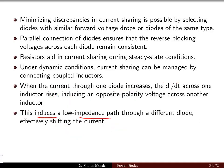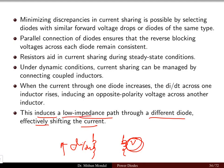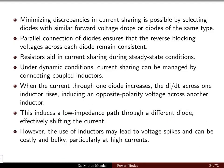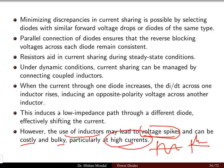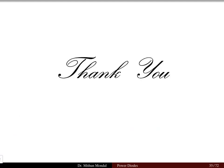This induced voltage creates a low impedance path through a different diode, effectively shifting the current. However, the use of inductors may lead to voltage spikes, which can be costly and result in bulky systems, particularly at high currents. In this lecture we focused on power diodes — how they are connected in series and parallel depending on the requirement of high voltage or high current. We will continue this discussion in the coming lecture. Thank you.